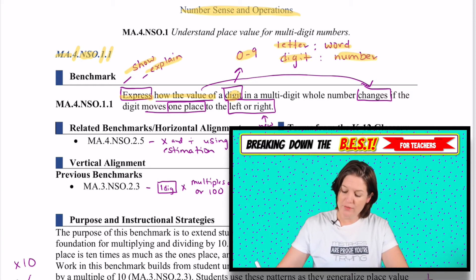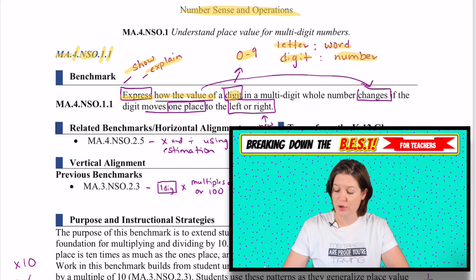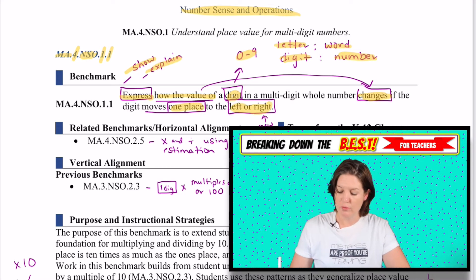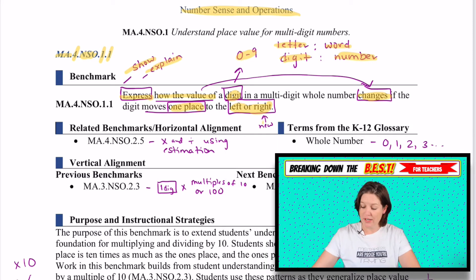The way that I teach students is, just like words have letters, a word is made up of letters, a number is made up of digits. And the thing is, is that those digits are in different places and their value changes, which is what this whole standard is about. It's to express how the value of a digit in a multi-digit whole number changes if the digit moves from one place left or right. I pointed out right here that going to the right on the place value chart is new.